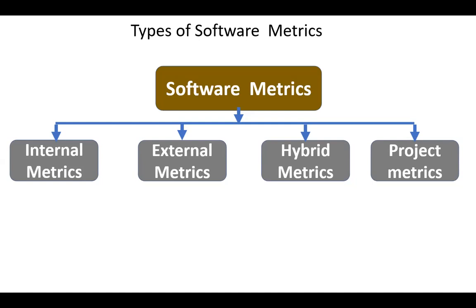Hello, everyone. Today our topic is types and the classification of software metrics. There are four types of software metrics: internal metrics, external metrics, hybrid metrics, and project metrics.